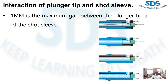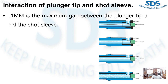Consider the interaction of the components of an aluminum diversion system. Perhaps the most critical is the interaction of the plunger tape and the short sleeve. Unless each is operating at close to optimal vacancy, the operating life of both will be substantially reduced.